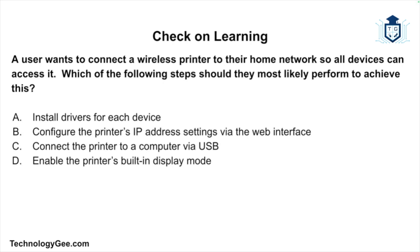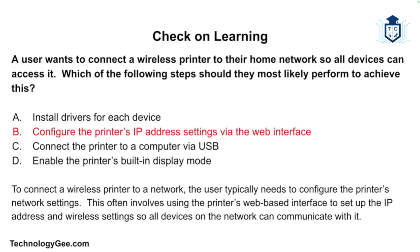The final question: a user wants to connect a wireless printer to their home network so all devices can access it. Which step should they most likely perform — install drivers for each device, configure the printer's IP address settings via the web interface, connect the printer to a computer via USB, or enable the printer's built-in display mode? The correct answer is to configure the printer's IP address settings via the web interface. To connect a wireless printer to a network, the user typically needs to configure the printer's network settings using the printer's web-based interface to set up the IP address and wireless settings so all devices on the network can communicate with it.